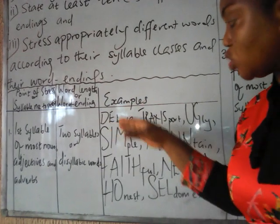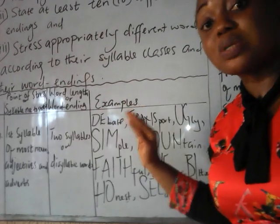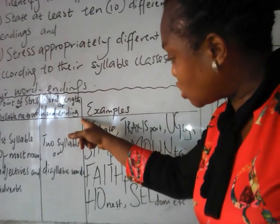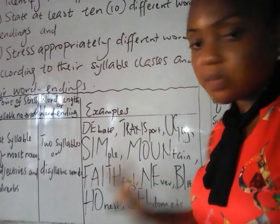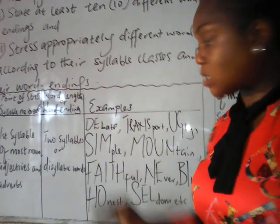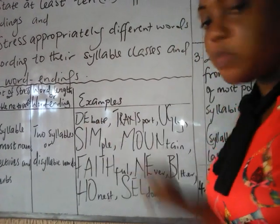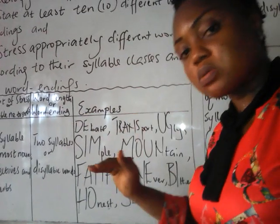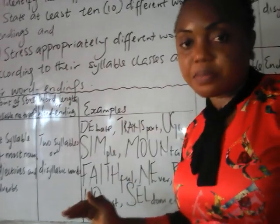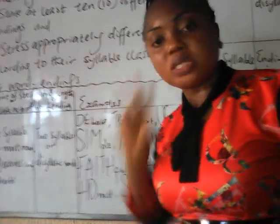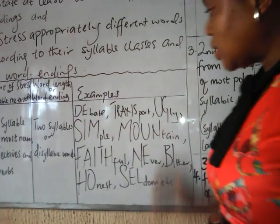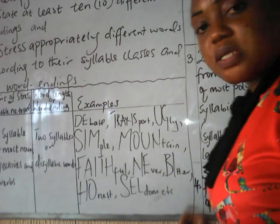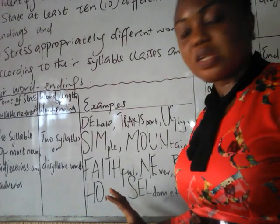In your examination, we normally indicate stress with capital letters. In a dictionary, you place the stress mark on top. But for exam purposes, we capitalize. Examples of disyllabic nouns, adjectives, or adverbs stressed on the first syllable include: transport, ugly, simple, mountain, faithful, never, bitter, honest, seldom, and so on.